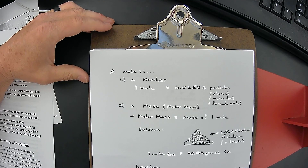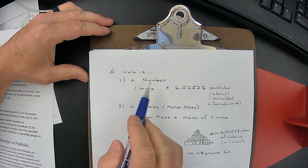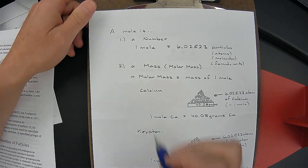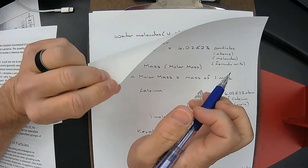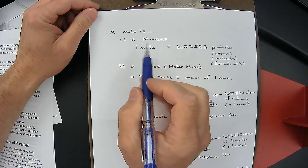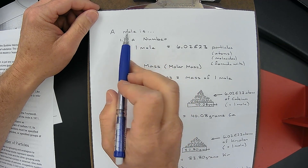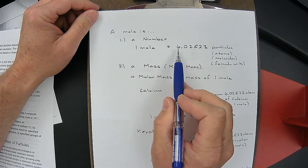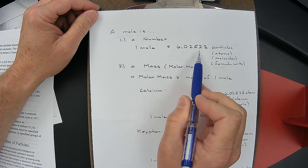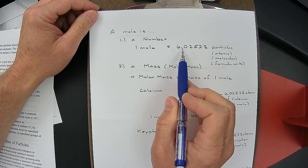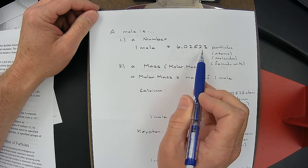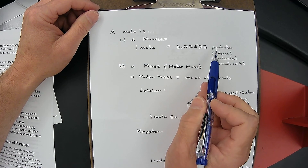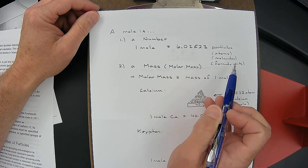During our last video, we looked at how a mole can be interpreted as a couple of different things. The first item is that a mole is simply a number. Just like a pair means 2 or a dozen means 12, the term mole is simply a number equal to 6.02 × 10²³. Moving the decimal 23 places to the right gives us approximately 602 billion trillion. Those can be particles, atoms, molecules, or formula units.